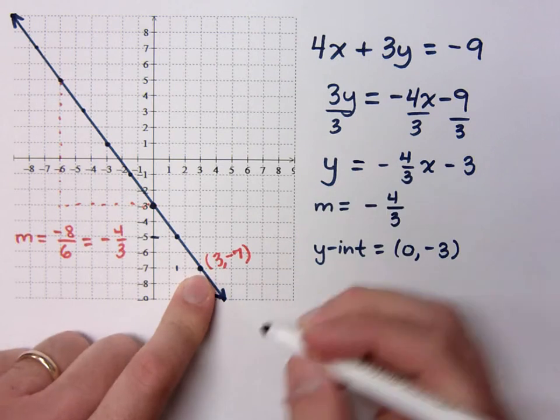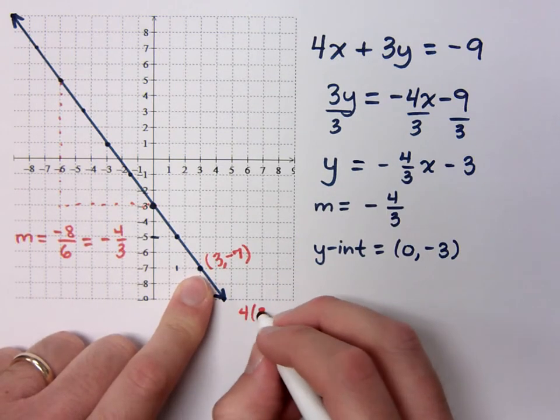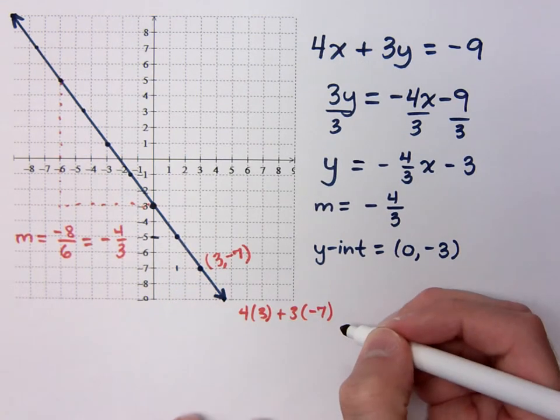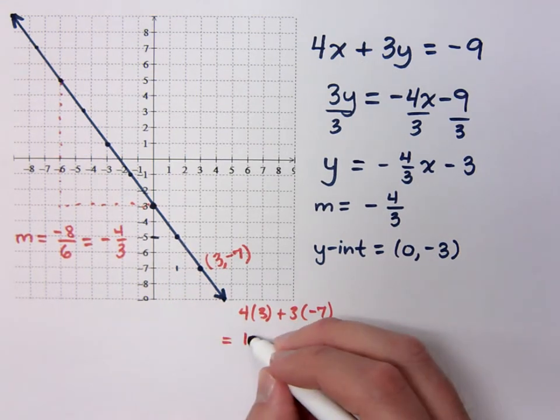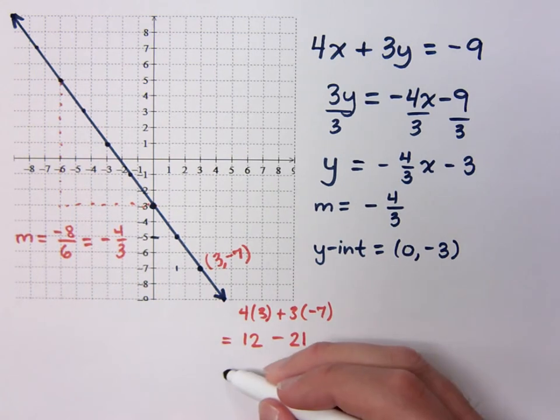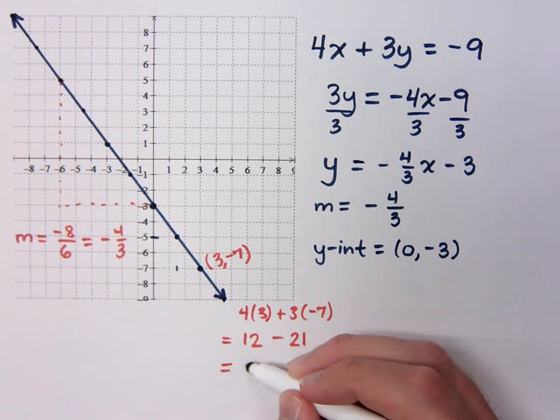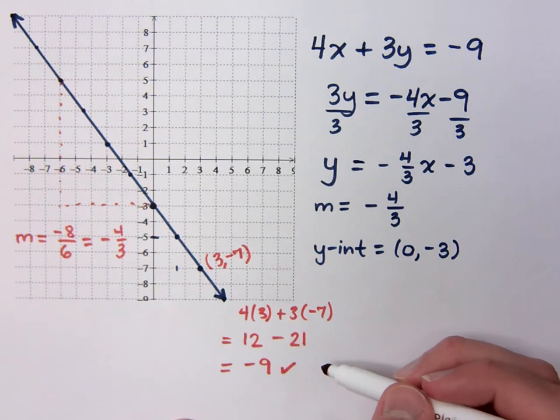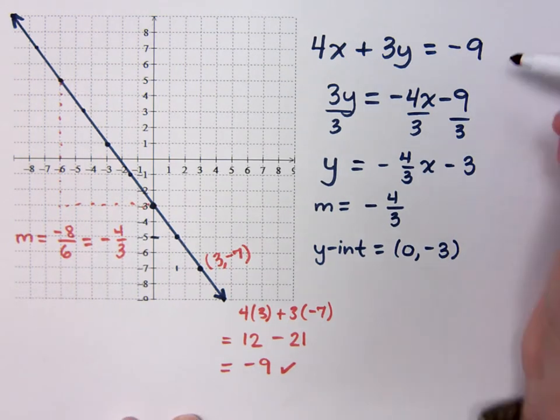So let's check that guy. If I plug three in for x, and I plug negative seven in for y, I end up with 12 minus 21. What does that equal? That equals negative nine. So that point is verified as a solution to my original equation.